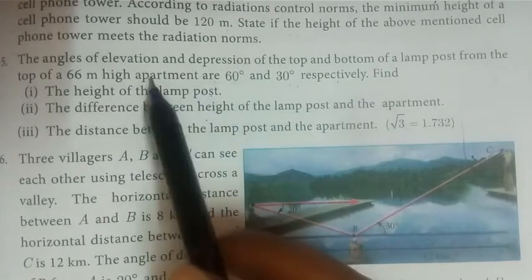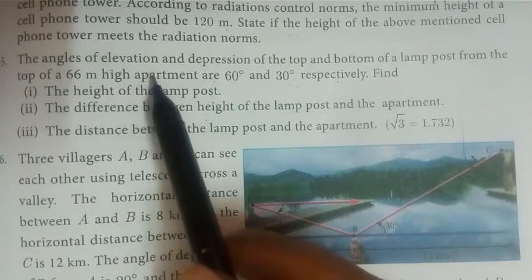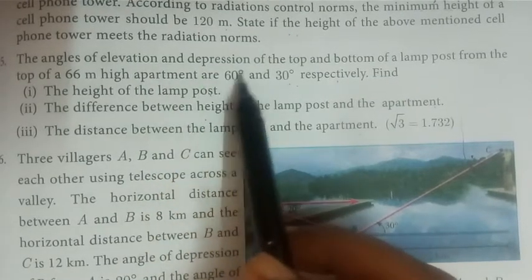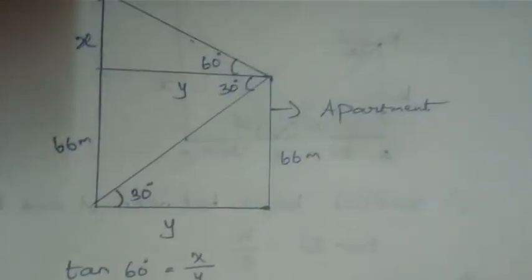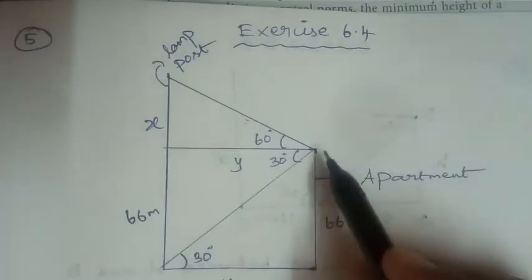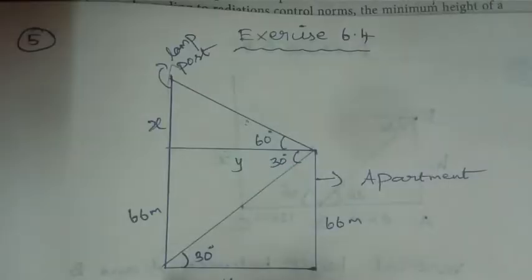So now, from the top of the apartment, we drop a perpendicular to the lamppost. Let's draw the figure: this is the apartment, and this is the lamppost.